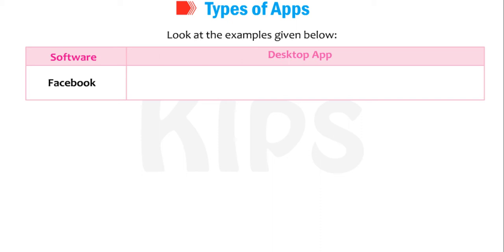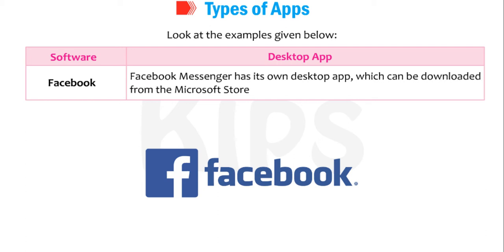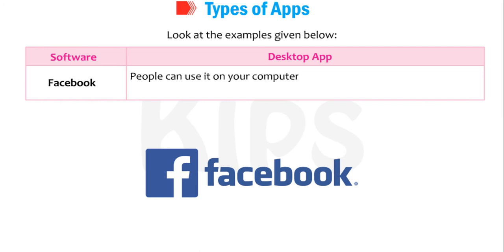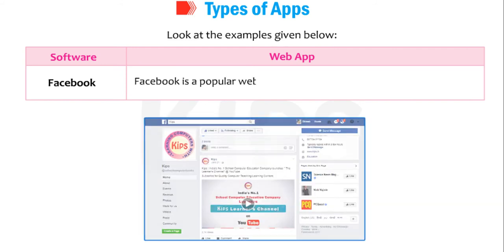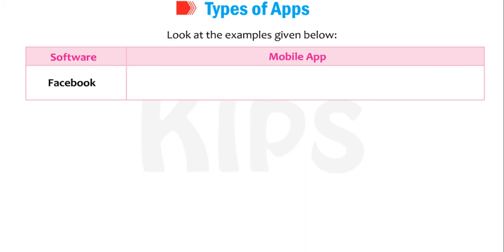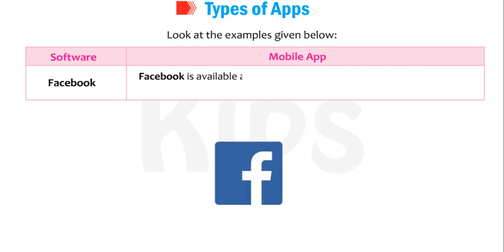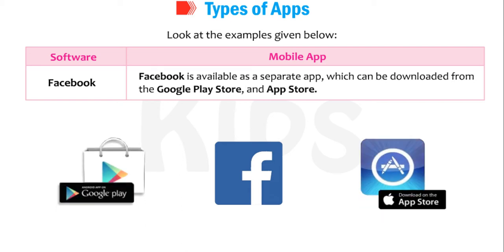Facebook Messenger has its own desktop app which can be downloaded from the Microsoft Store and Mac App Store. People can use it on their computer to send messages and make video calls. Facebook is also a popular web application used for social networking. As a mobile app, Facebook is available as a separate app which can be downloaded from the Google Play Store and App Store.